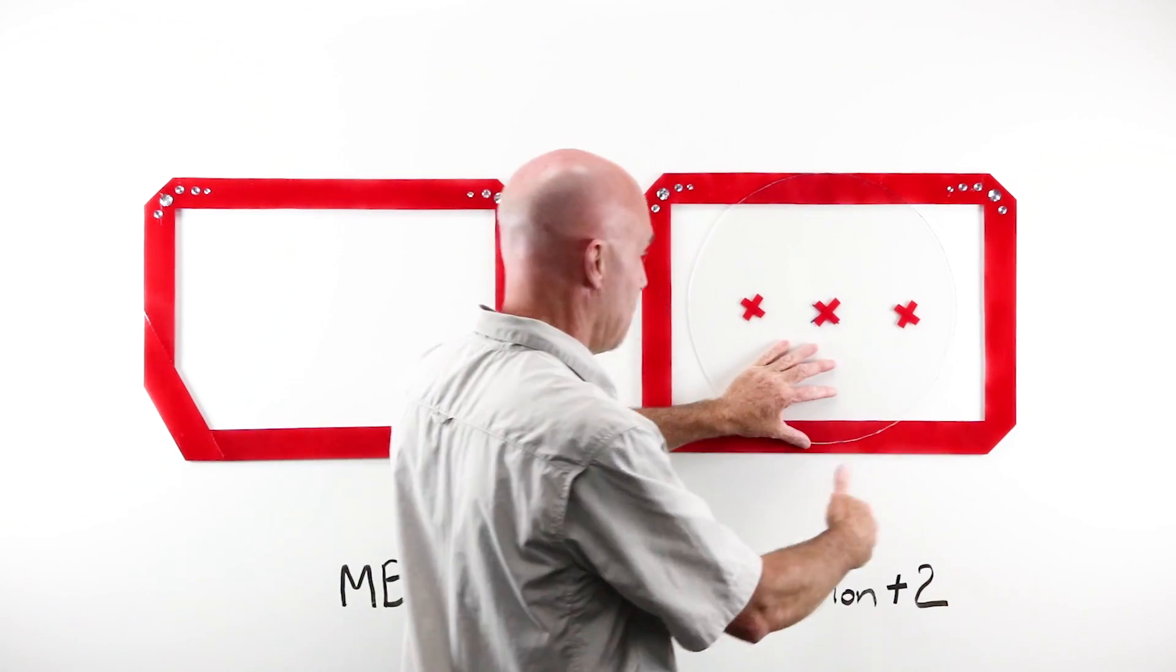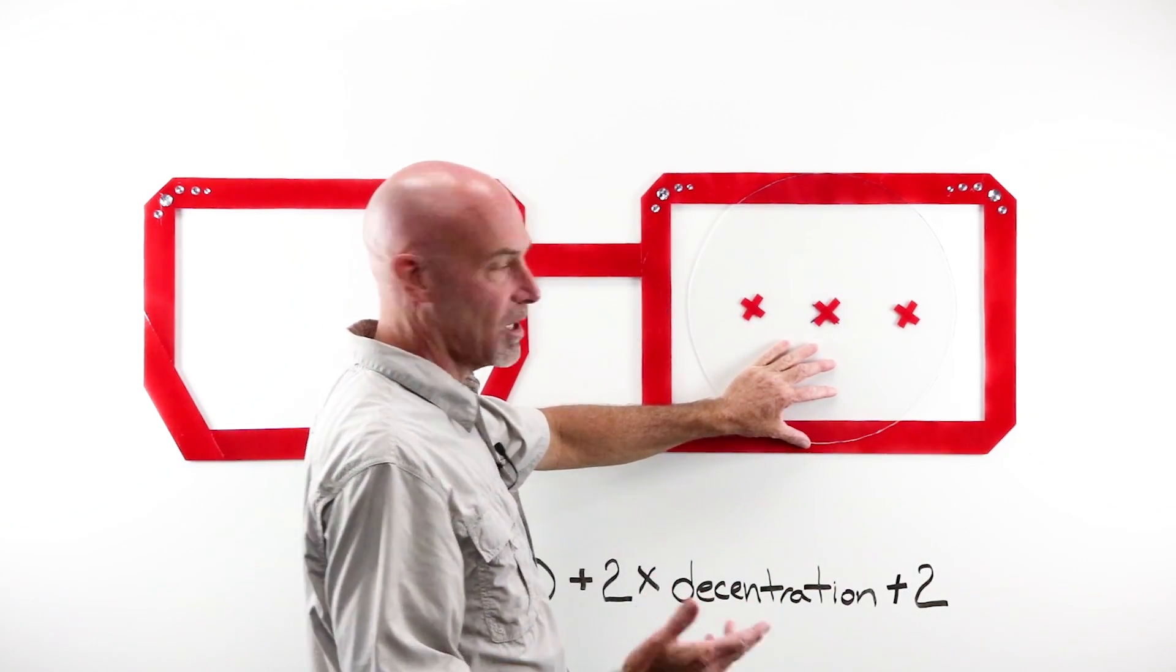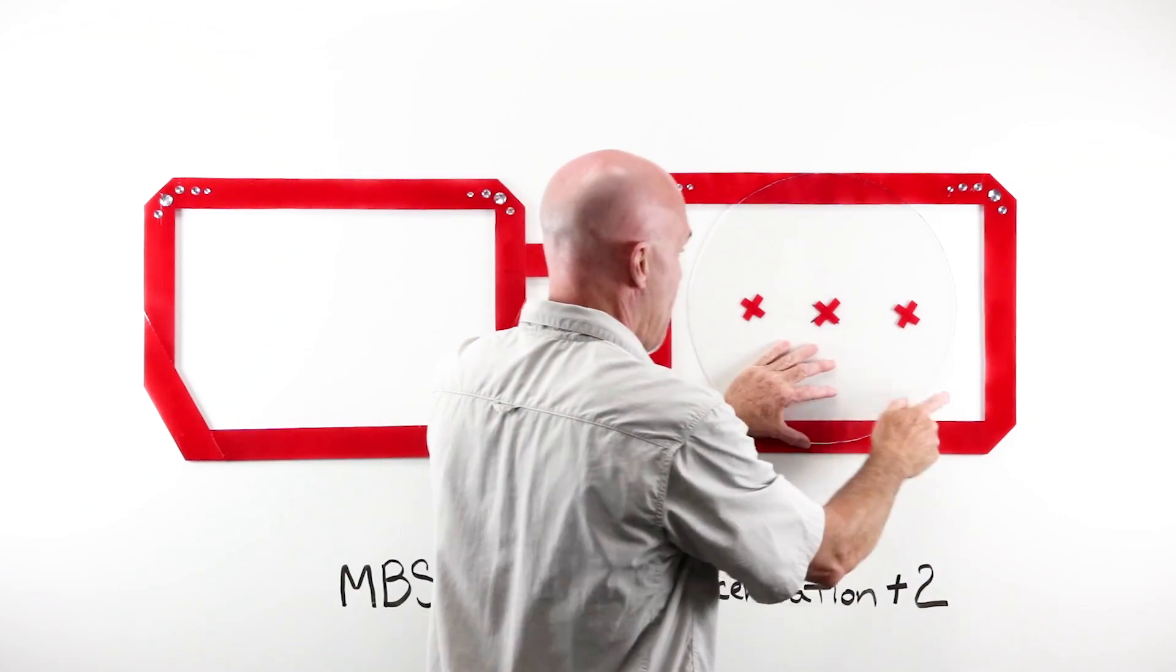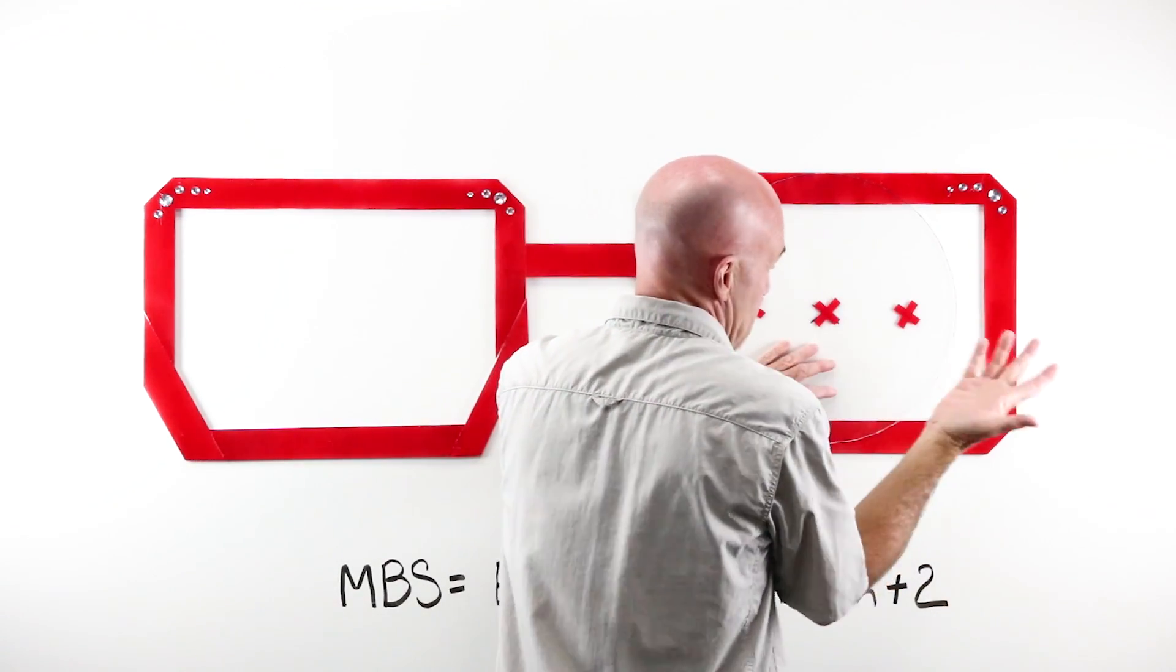This lens blank, this minimum blank size, is too small, I have holes, I have gaps. If I tried to cut this out, it wouldn't work. A modern edger will kick it out, I'd have giant gaps if I forced it.